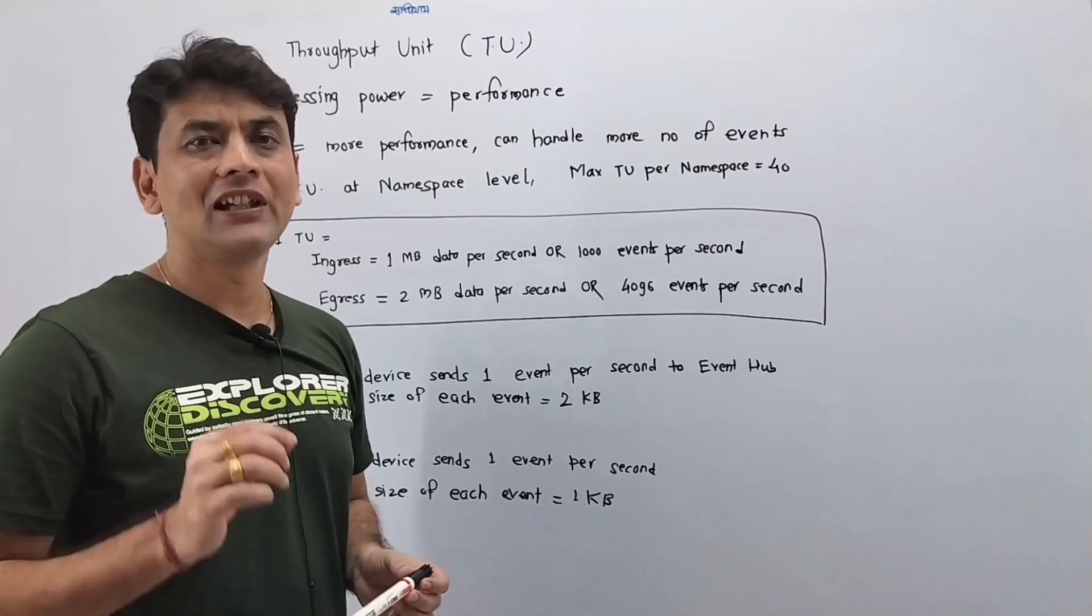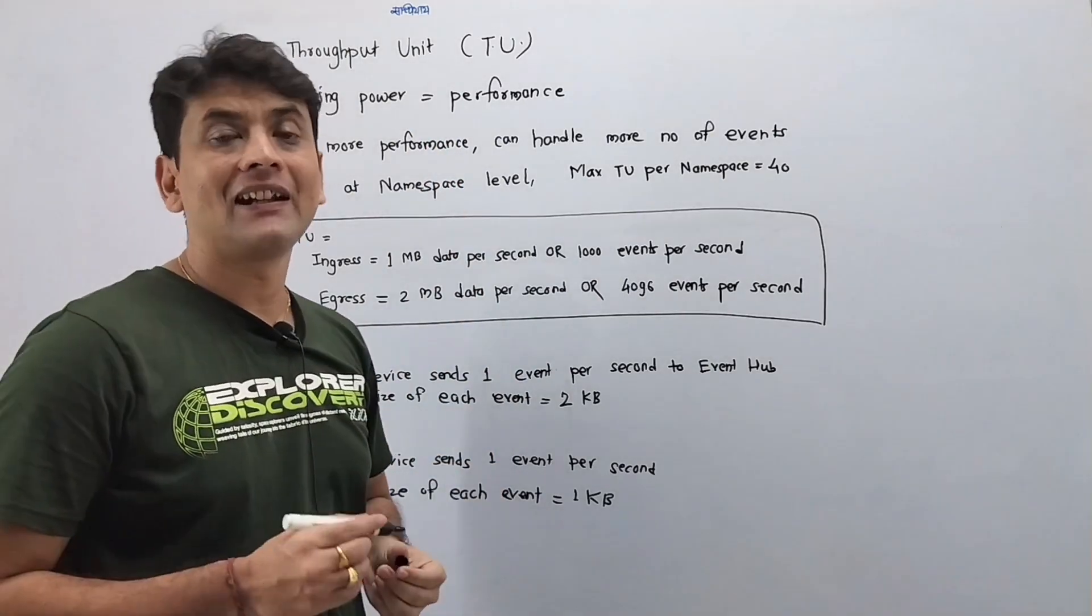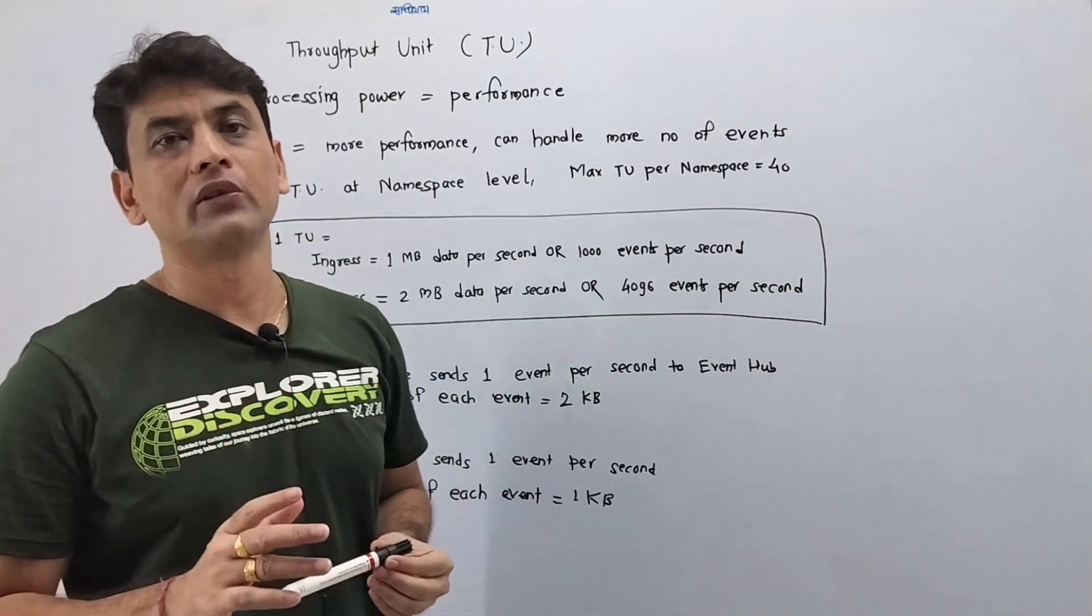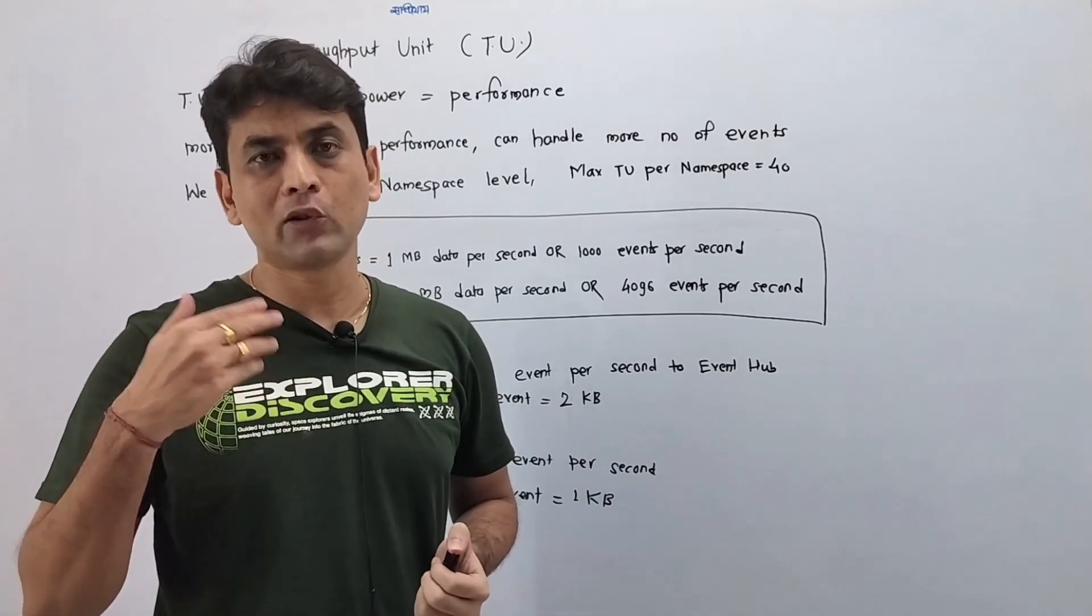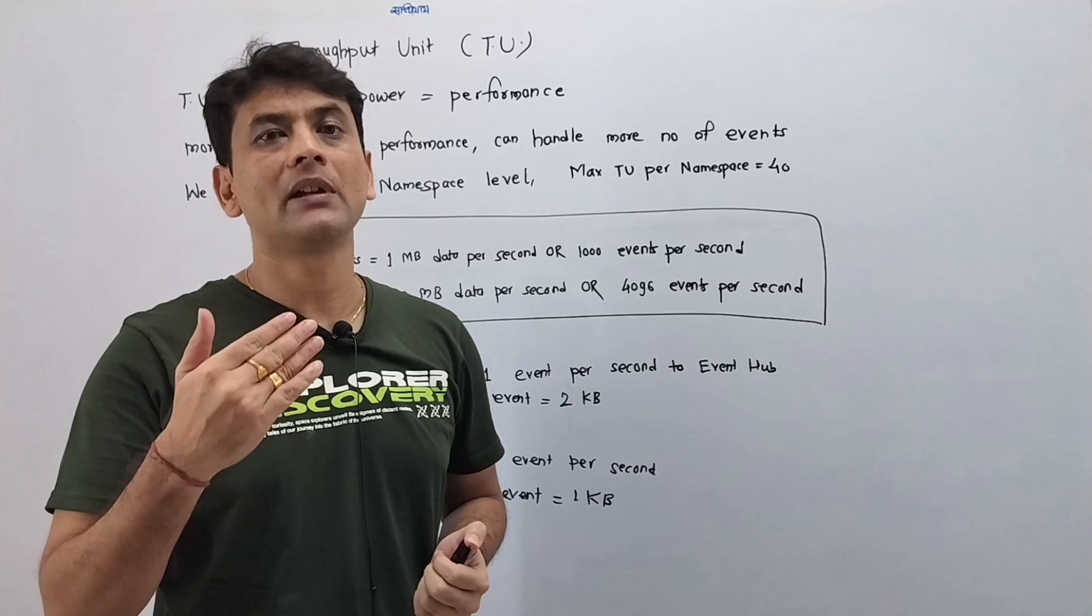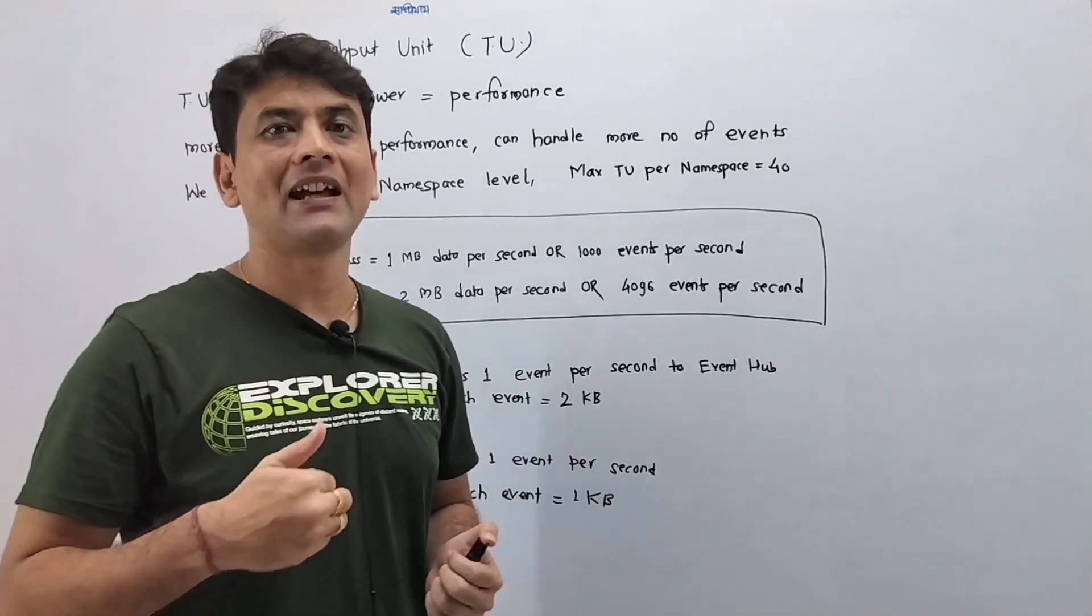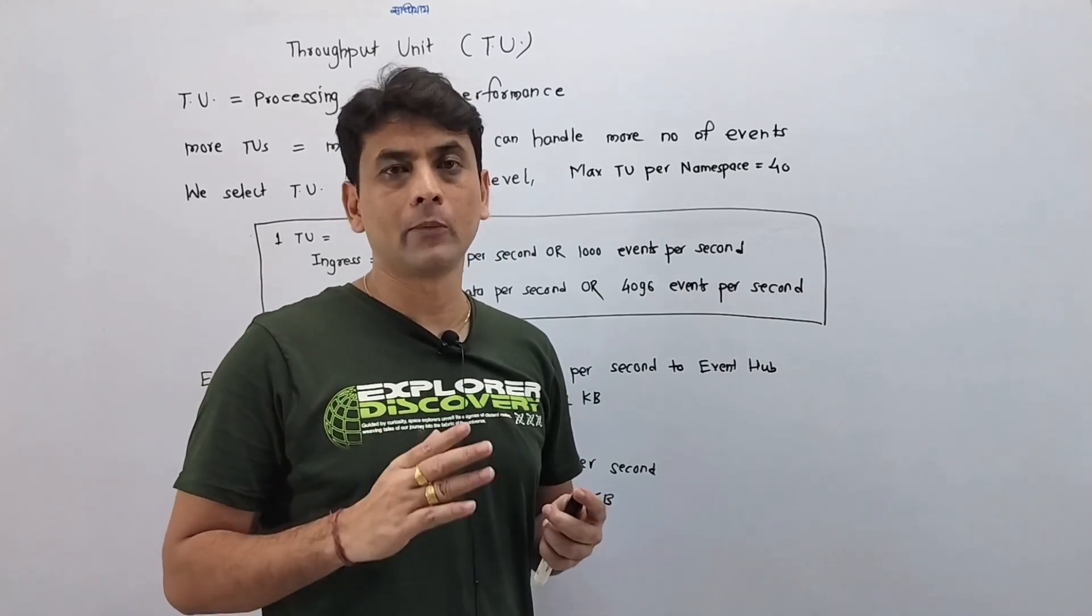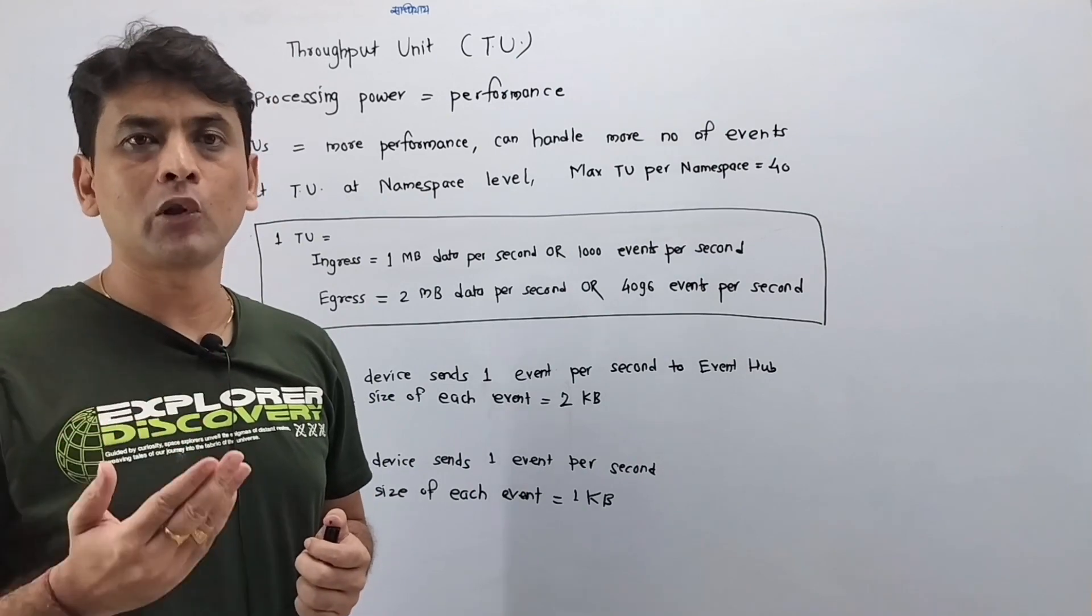Hello guys, in this video let's discuss throughput units, or TU, which is a very important concept. We now know that a publisher will stream or send data to Event Hub. That data from Event Hub will be consumed by the consumer group, and Event Hub can handle a huge amount of data. We are aware of this, but as Event Hub is handling huge amounts of data...